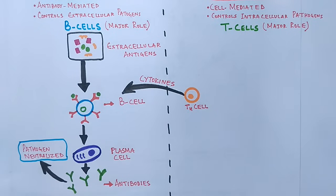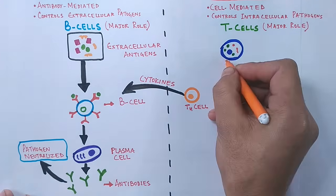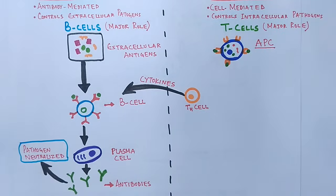Now getting to cellular immunity, we see the intracellular pathogens are displayed or flagged by antigen-presenting cells via MHC processing. Intracellular antigens are expressed on the surface of antigen-presenting cells like macrophages or dendritic cells.